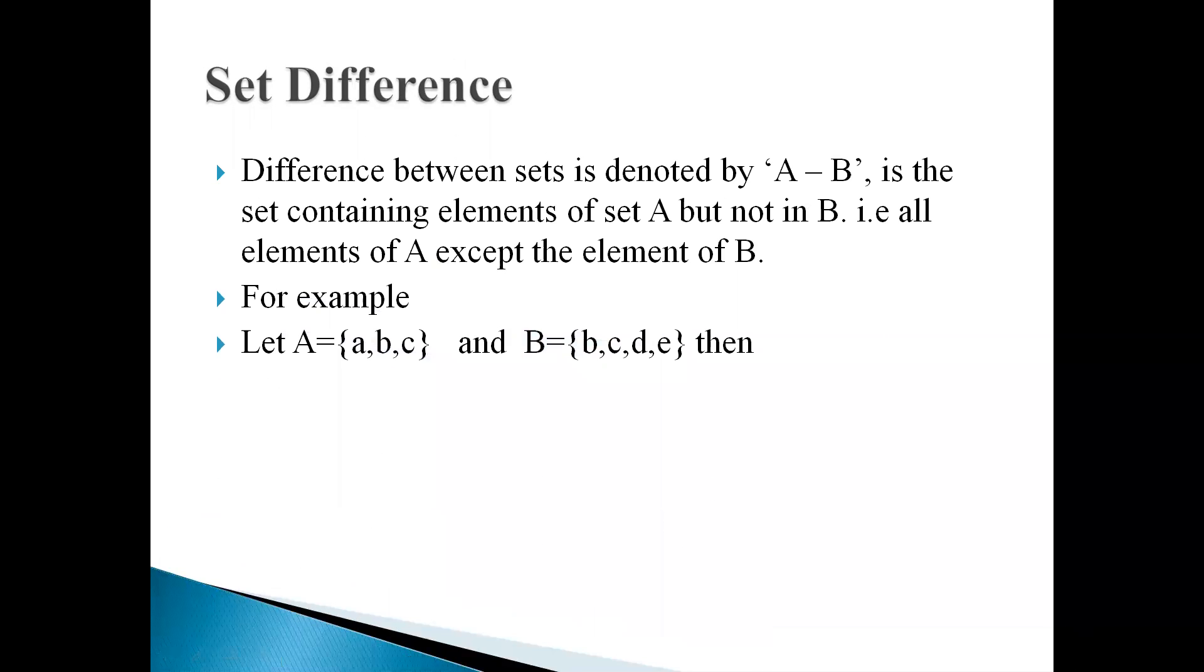For example, suppose we have set A and set B, the set A elements are A, B, C, set B elements are B, C, D, E. And if we want to find out A minus B, then the content of B or the elements of B minus from the elements of A. Here, in both sets B and C are common, so that B and C are eliminated from set A. So, the answer of A minus B is equal to A only. And if we want to find out the answer of B minus A, in that case the content of A minus from B. Here again B and C are common, so the answer is D and E.